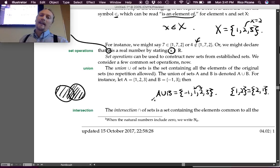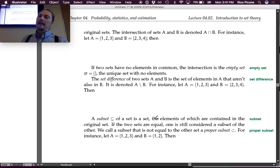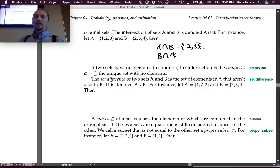The intersection, which is just like union but upside down, of sets is a set containing the elements common to all the original sets. The intersection of sets A and B is denoted A intersect B. For instance, let A be {1, 2, 3} and B be {2, 3, 4}. Then A intersect B is equal to what? {2, 3}. Wonderful. What is B intersect A? Same thing.